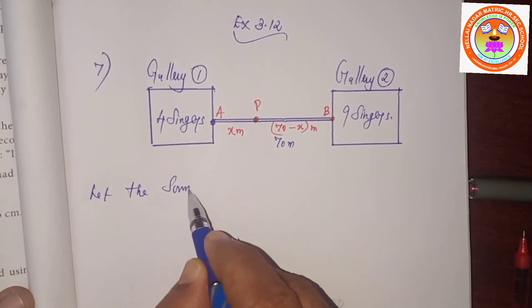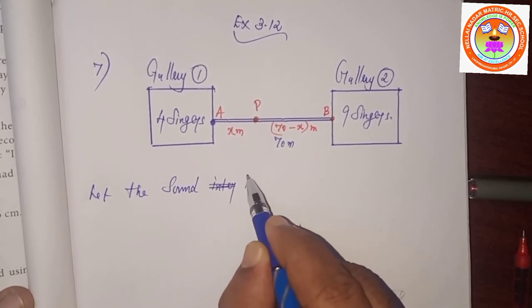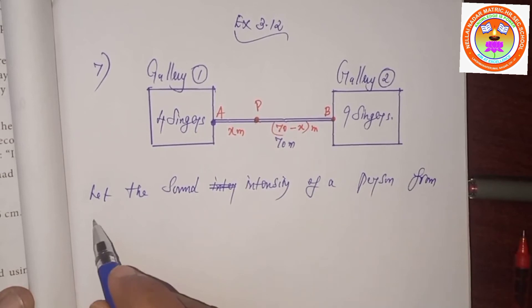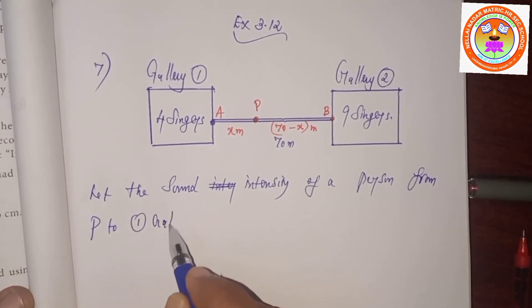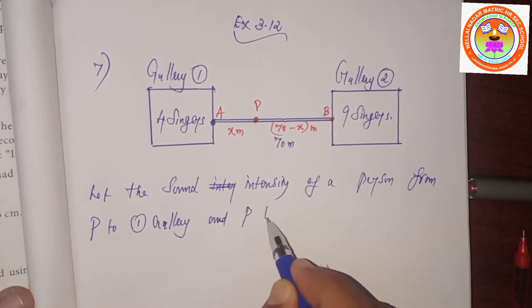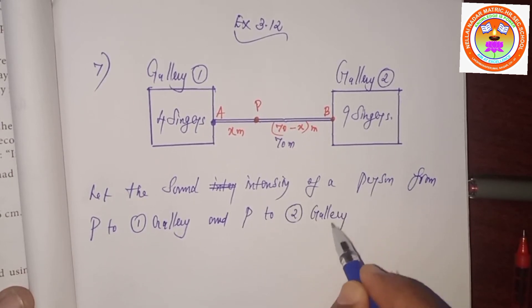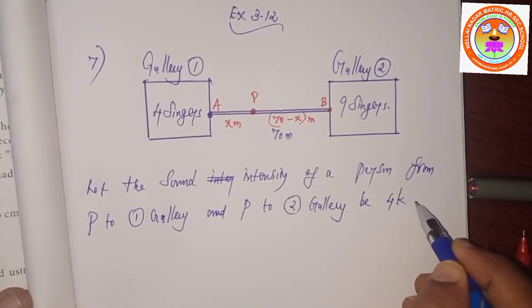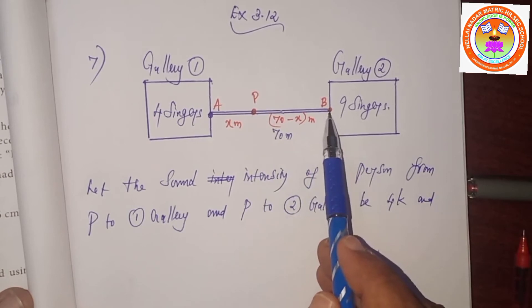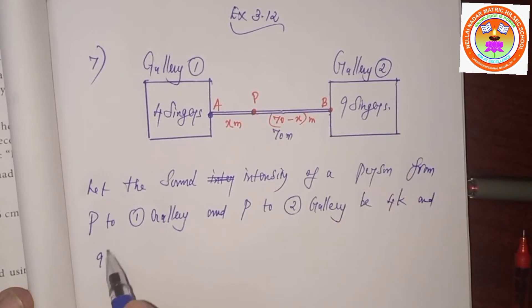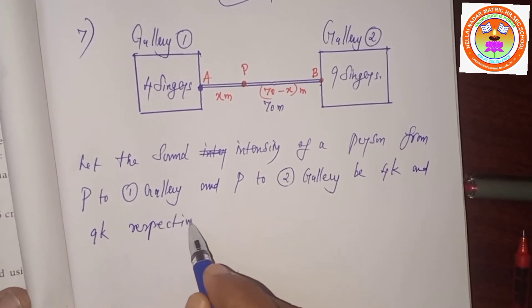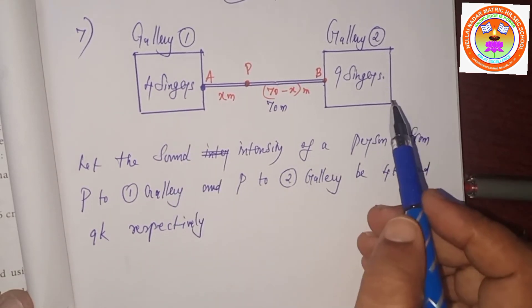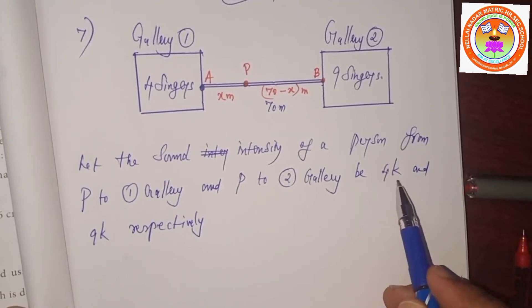Let the sound intensity from P to the 1st gallery be 4K (since 4 singers), and from P to the 2nd gallery be 9K (since 9 singers). You have to introduce the constant K — 4 and 9 are the number of singers, so for sound intensity use 4K and 9K respectively.